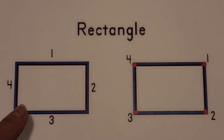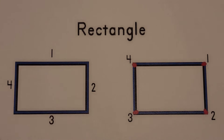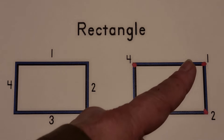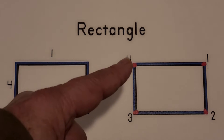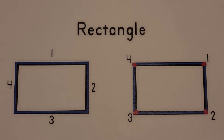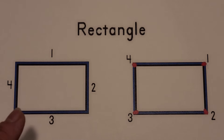This is a rectangle. A rectangle has four sides. One, two, three, four. And a rectangle has four corners. One, two, three, four. It has four sides and four corners like a square, but it has two sides that are longer.